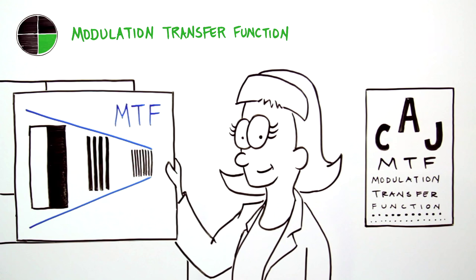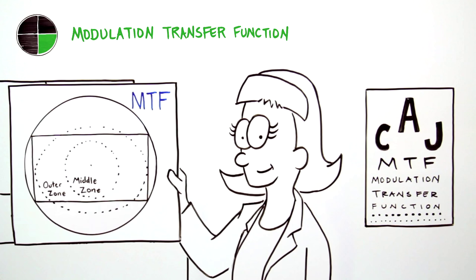Optical physics dictates that MTF naturally declines as detail increases. MTF also falls off when moving from picture center to the extremities.